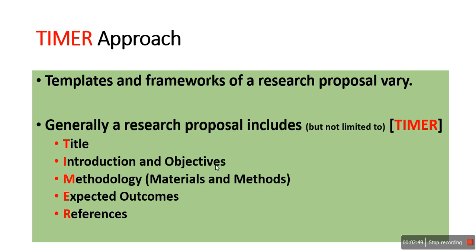TIMER is an abbreviated form of five different components: T stands for Title, I stands for Introduction and Objectives, M stands for Methodology — which includes materials and methods — E stands for Expected Outcomes, and R stands for References. The format and framework of a research proposal may vary, but generally it includes these different components.